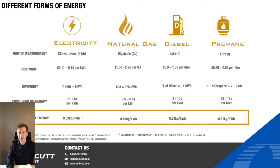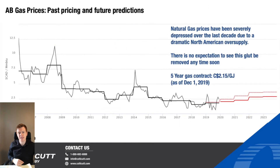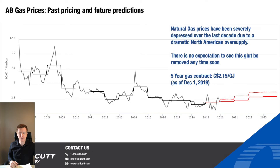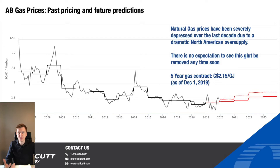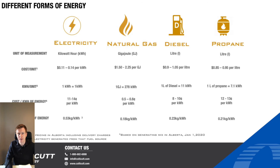Now why is natural gas so much cheaper per kilowatt hour than these other forms of energy? The reason is because in the last few years there has been an absolute excess of supply due to production increases, and as a result price has dramatically dropped — and we're not seeing that changing anytime soon. There is such a prolific supply and storage of natural gas. The other reason is because there is such a dense volume of energy stored within every unit of natural gas.